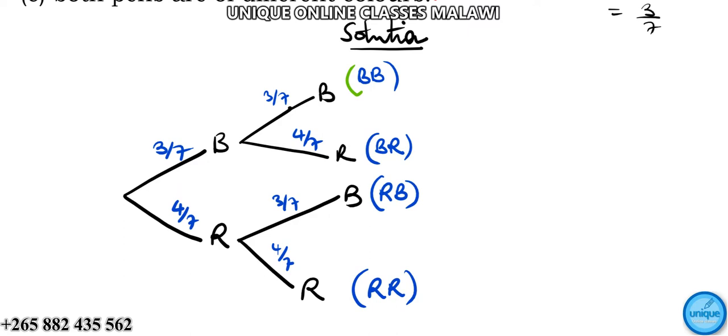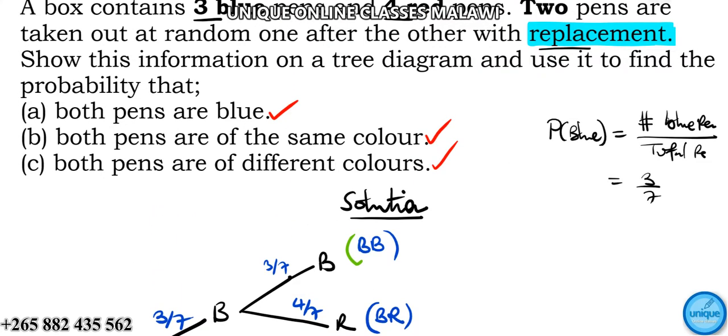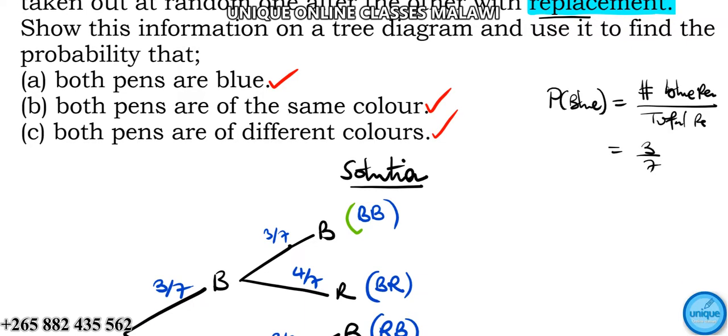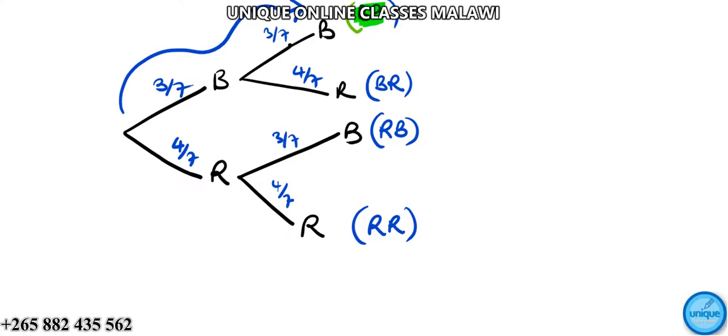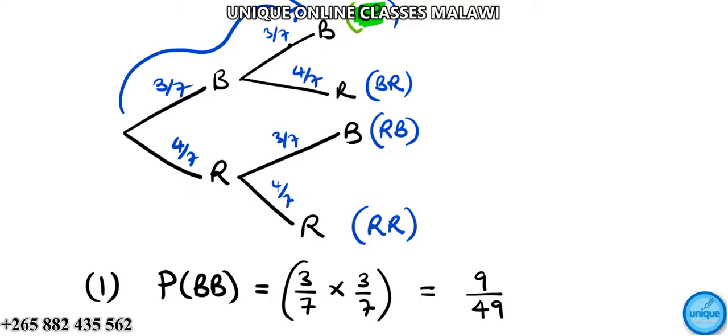Now let's find the probability that both pens are blue. Both pens are blue - this is the probability, the blue-blue branch. P(BB) is 3 over 7 times 3 over 7, which equals 9 over 49. This is the probability of having two blue pens.